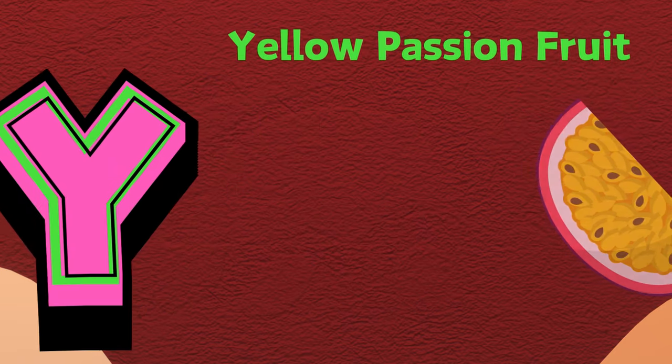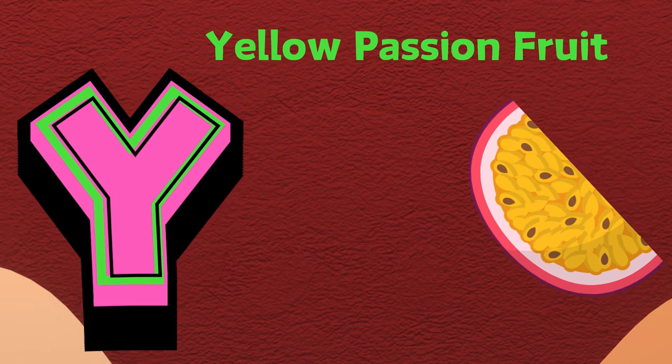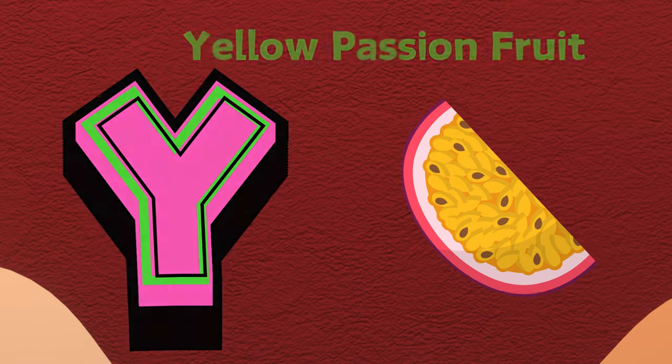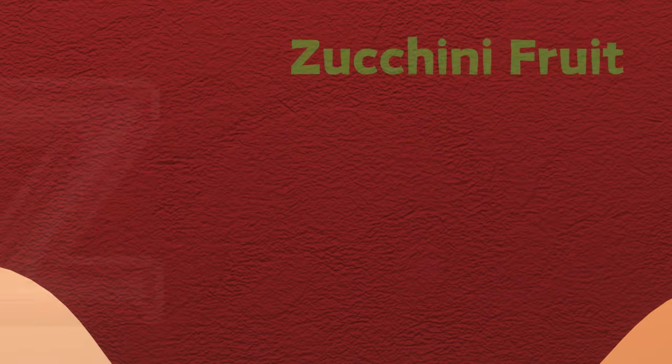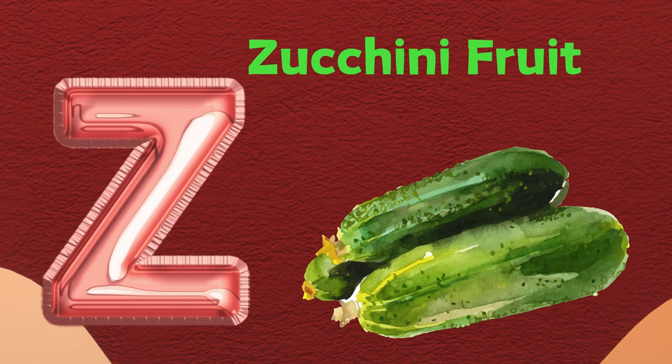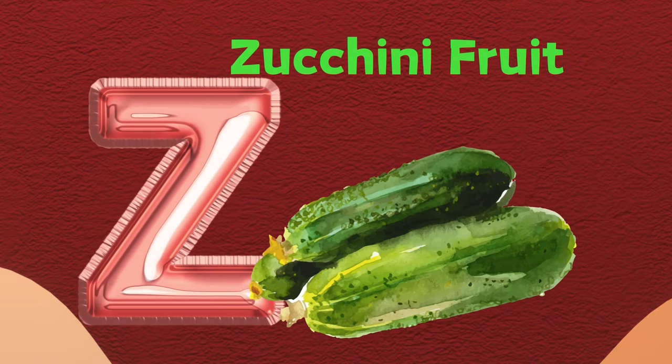Y is for yellow passion fruit. Y, yellow passion fruit. Z is for zucchini fruit. Z, zucchini fruit.